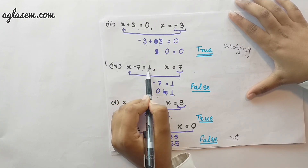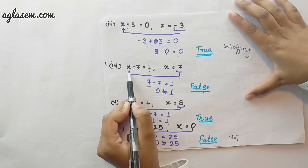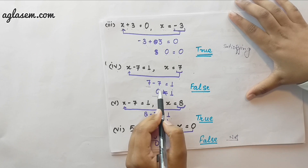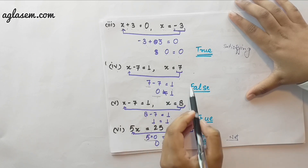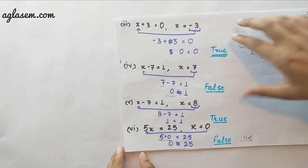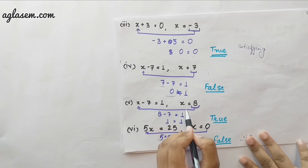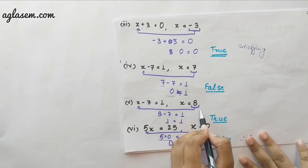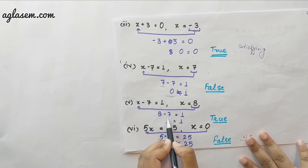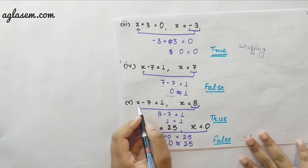The next question has the equation x minus 7 equals to 1, and x is equal to 8. We solve the left hand side: 8 minus 7 equals to 1. 1 is equal to 1, hence this value of x satisfies the equation.